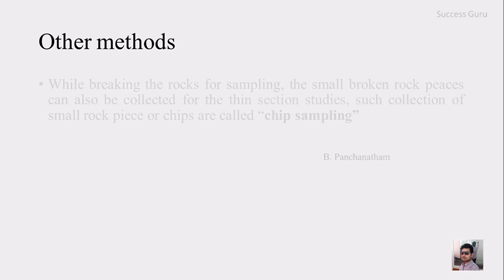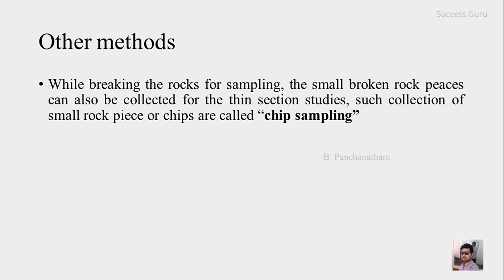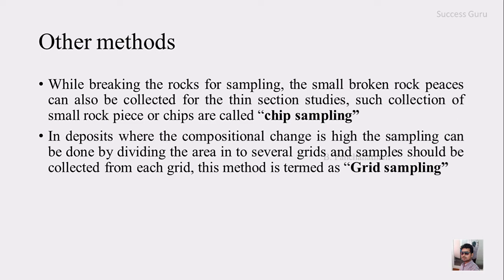There are some other sampling methods. The chip sample involves collecting small pieces or chips broken from a rock, which can be used for making thin sections. When there is a high variation in rock composition across an area, the best method is to divide the area into different grids and take samples from all of them — this is called a grid sample. These are the main types of sampling methods. If you have any doubts, you can ask in the class. Thank you.